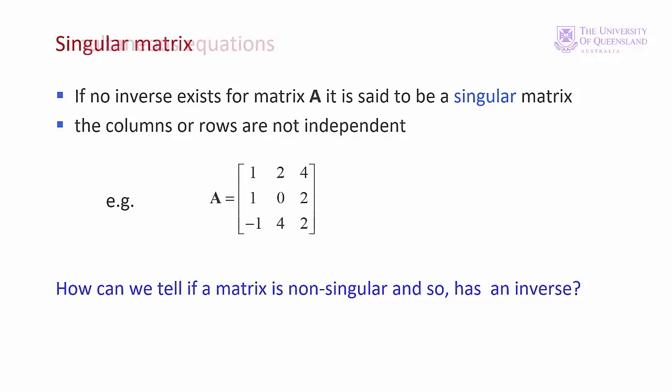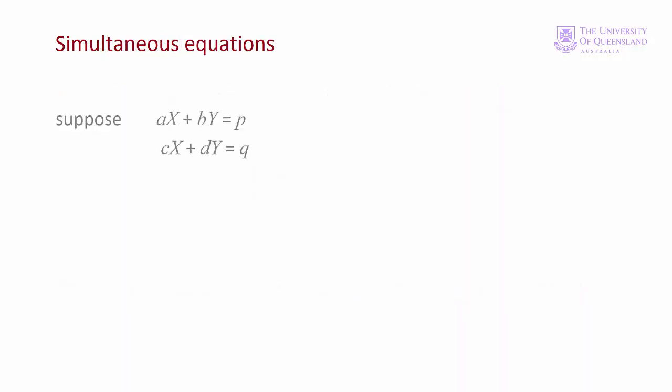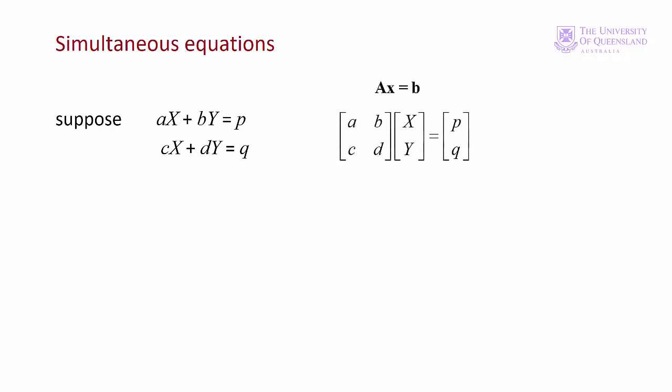First let's look at a pair of simultaneous equations. Here we have the general form: ax plus by equals p, and cx plus dy equals q. Here we have the matrix form. We can solve for x and y to get the following — let's see how we solve for x.